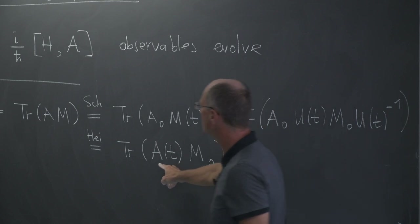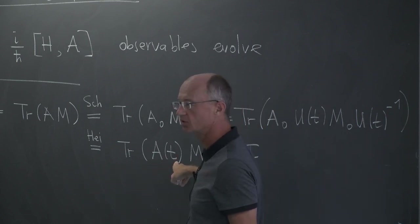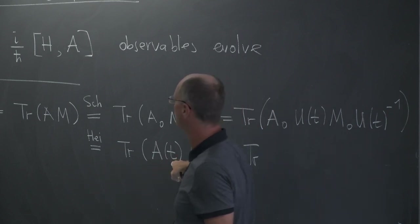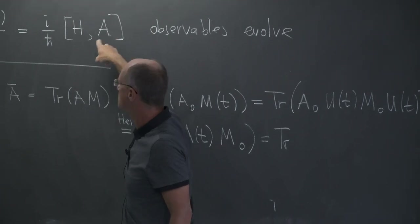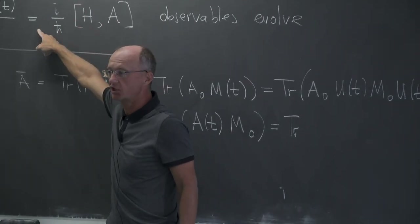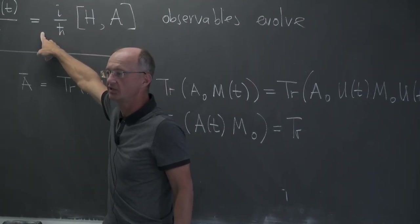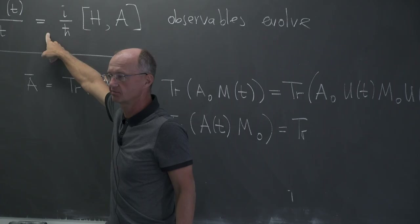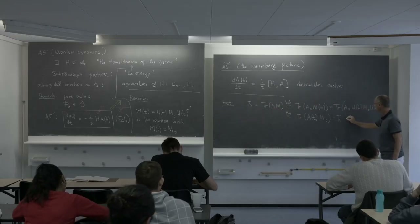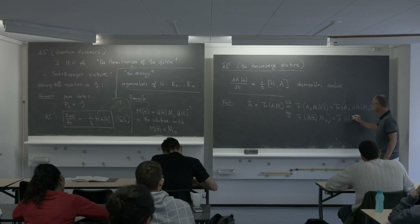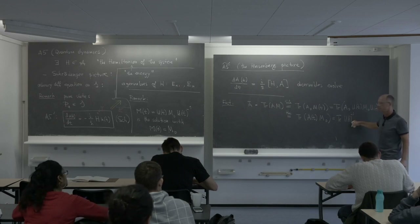One can guess the corresponding equation for A(t) in the Heisenberg picture: it is the same equation with opposite sign, meaning the solution replaces U(t) by U(t)⁻¹. The two expressions are equal under the trace — that is the equivalence between the Schrödinger and Heisenberg pictures.